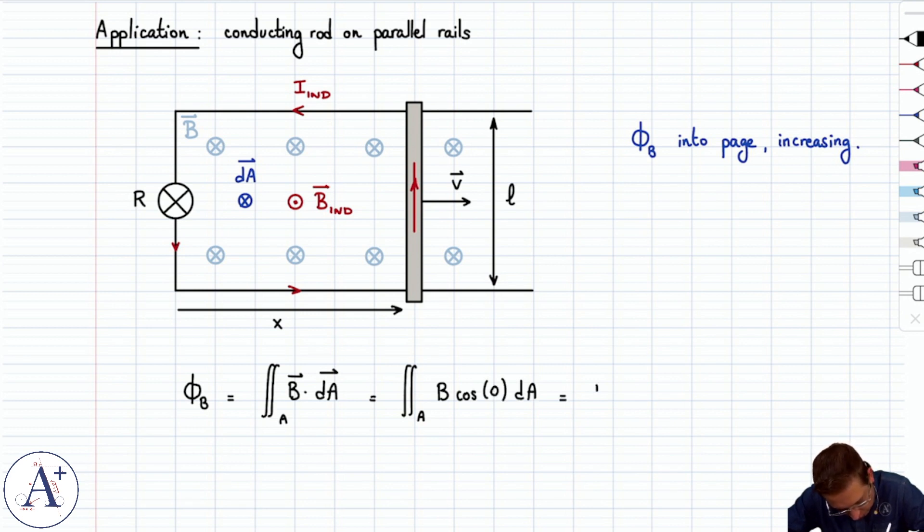So we're going to get the double integral of B cosine of 0 dA. Cosine of 0 is 1. B is uniform, so it comes out of the integral. And if we integrate dA over this rectangular area, we get the surface area, which is going to be the product of the side lengths. That's L multiplied by x. That's our magnetic flux. Fair enough.